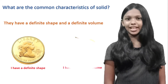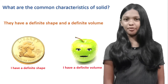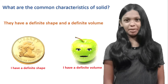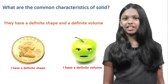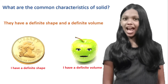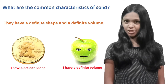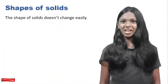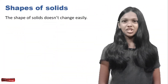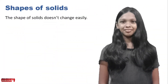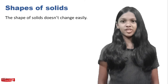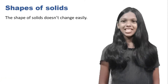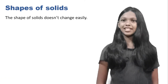Look at this apple here — it has a definite volume. Remember, both of them have a definite shape and a definite volume. Let's have a general idea about the shapes of solids. The shape of solids doesn't change easily.